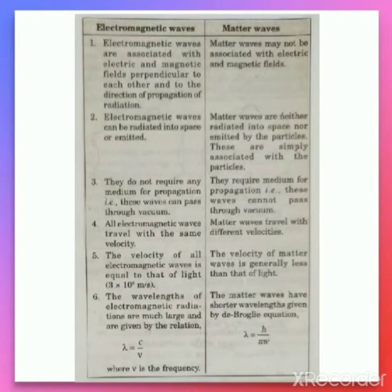Fifth difference: the velocity of all electromagnetic waves is equal to that of light, that is 3 × 10⁸ meters per second, which is a constant for all electromagnetic radiation. But the velocity of matter waves differs from particle to particle and is not the same as the velocity of light.